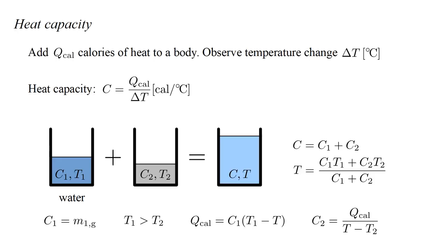Suppose the first body is water, with heat capacity C1, and temperature T1. The heat capacity of water is, by definition, equal to its mass in grams. Since the calorie is, by definition, the heat required to raise one gram of water by one degree.